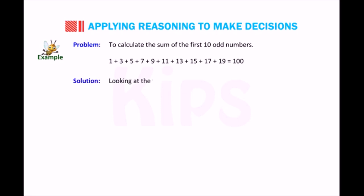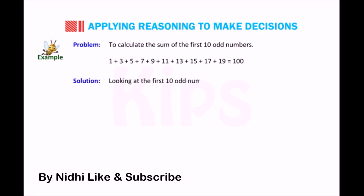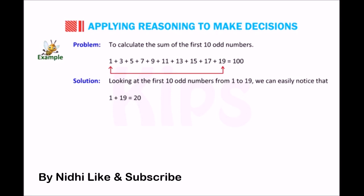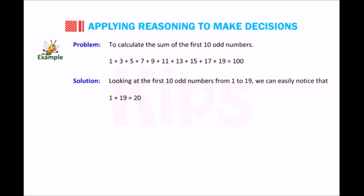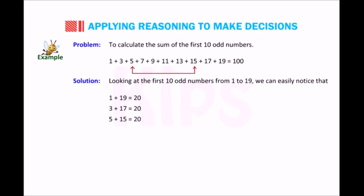Solution: Looking at the first 10 odd numbers from 1 to 19, we can easily notice that 1 + 19 = 20, 3 + 17 = 20, 5 + 15 = 20, 7 + 13 = 20, and 9 + 11 = 20.